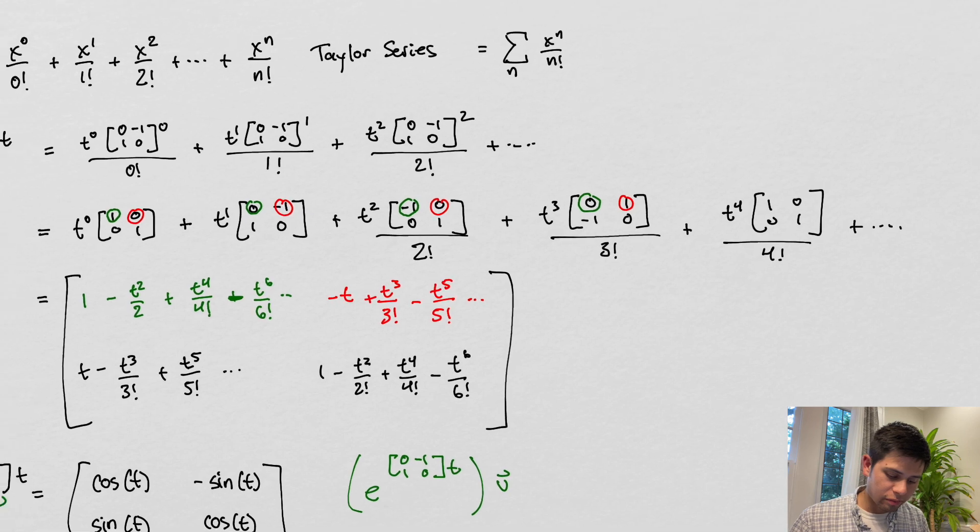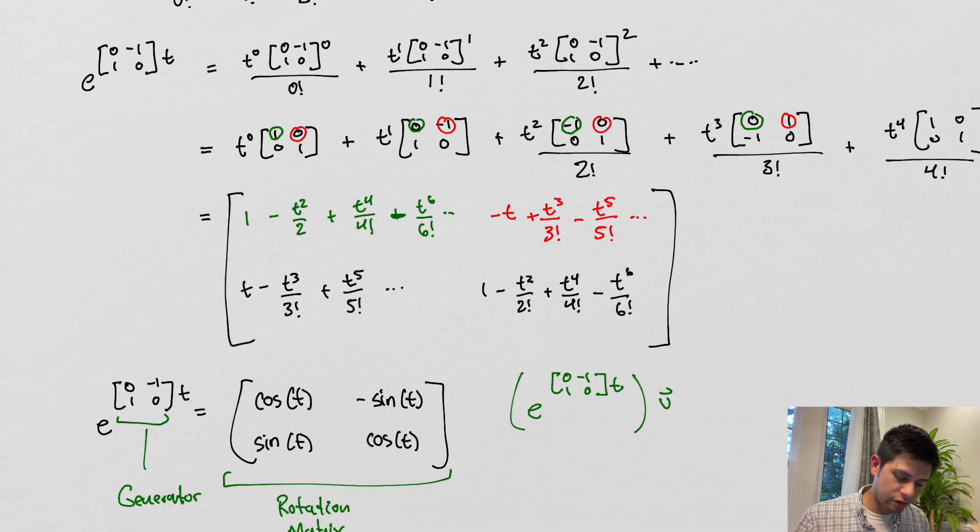Now what am I doing with these green and red? Well, I'm tracking these green and red points here. So t to the zeroth power is just one. Now let's just consider this upper left entry. So one times one is going to be one.